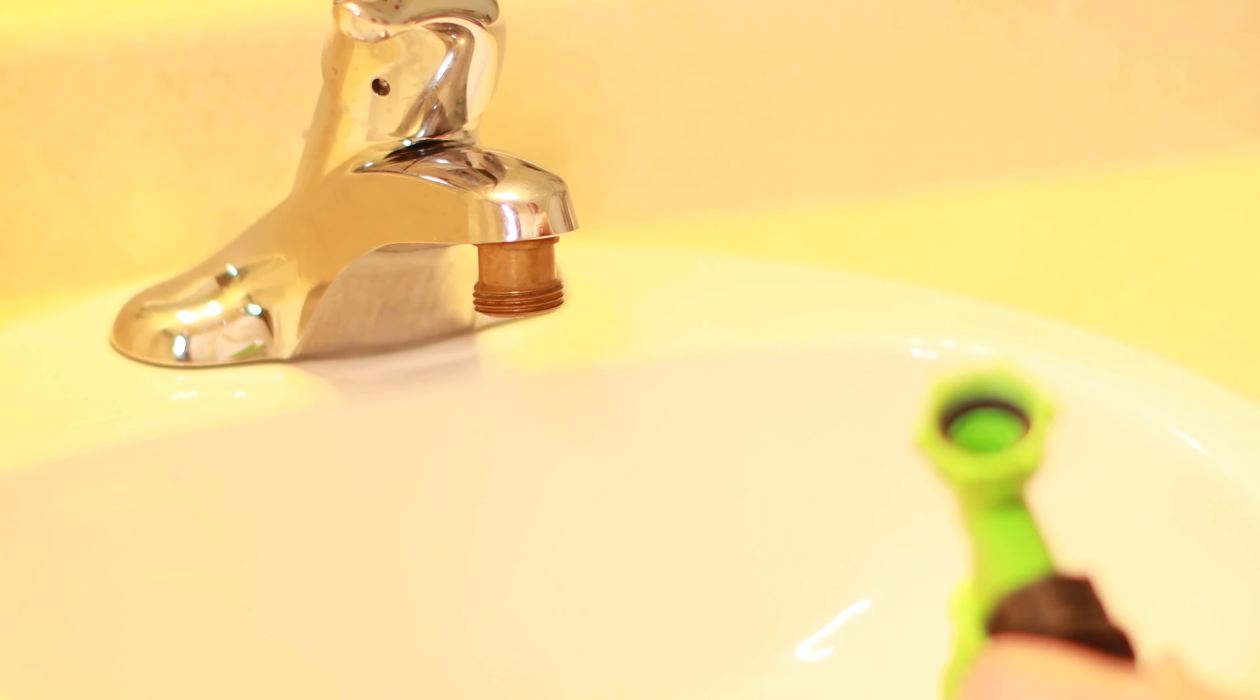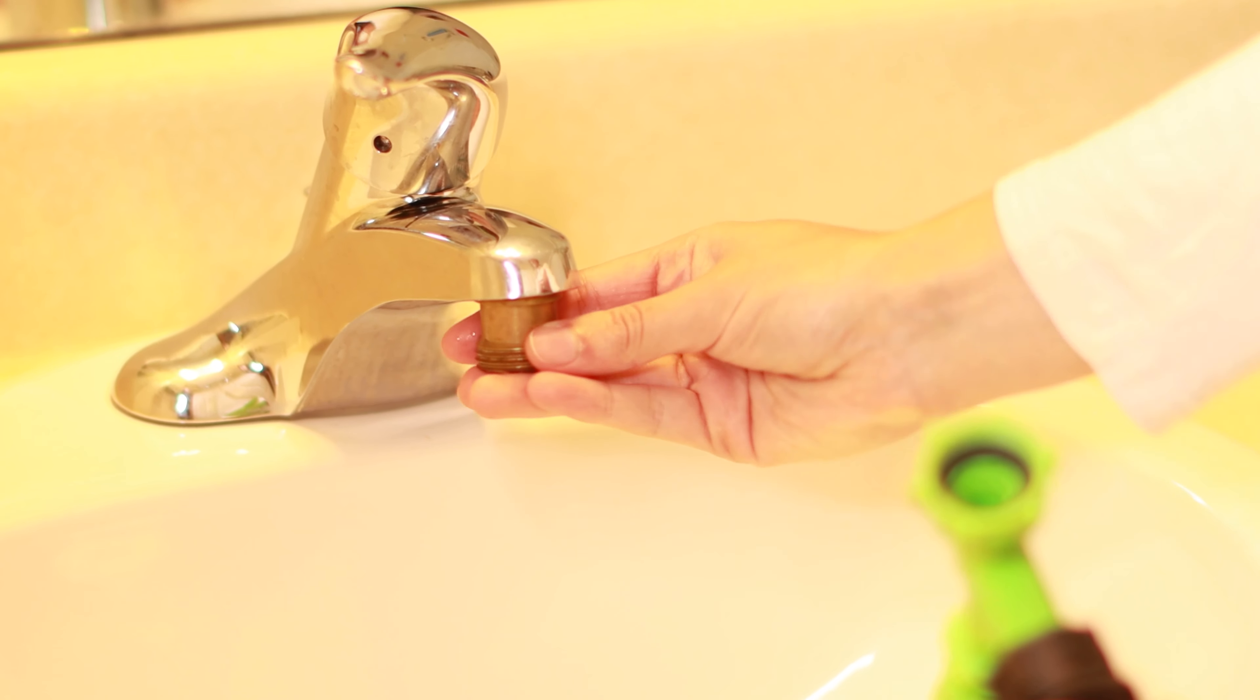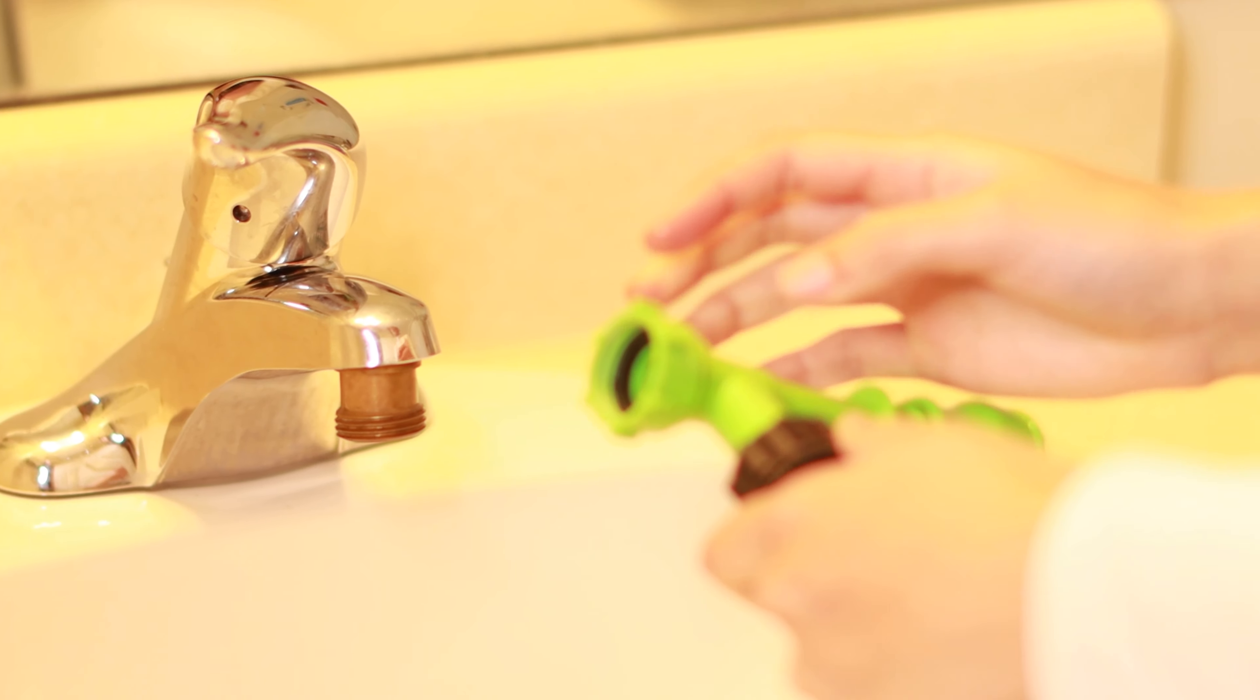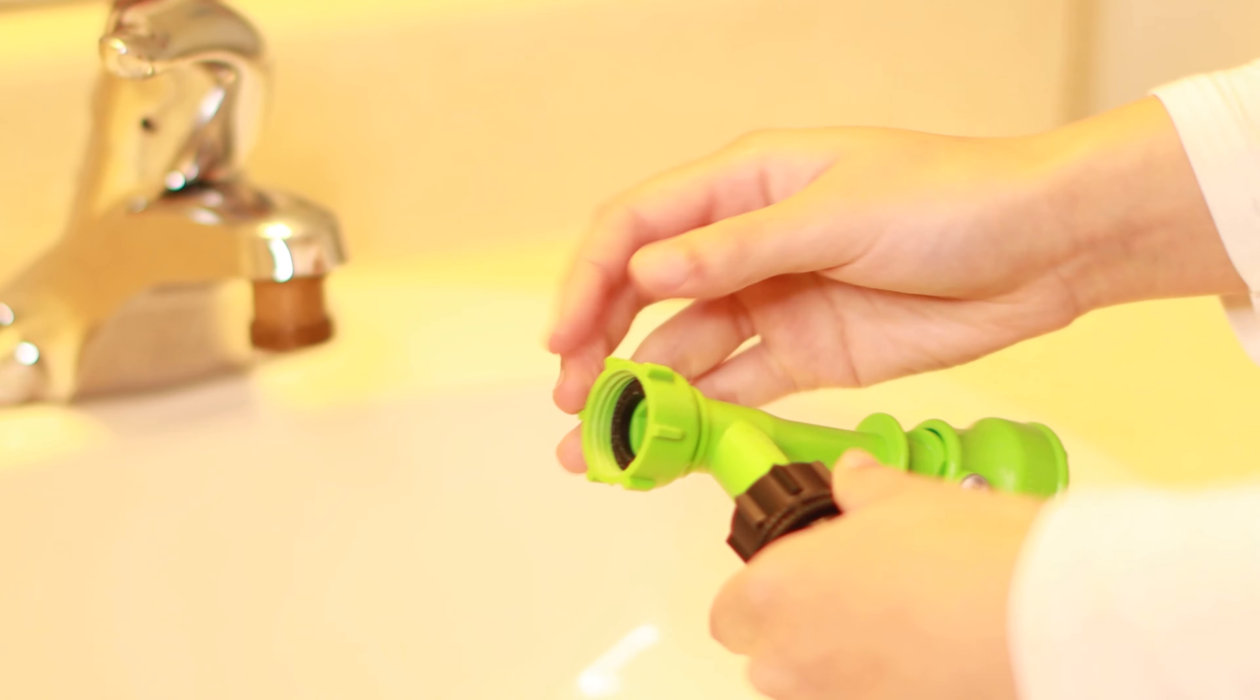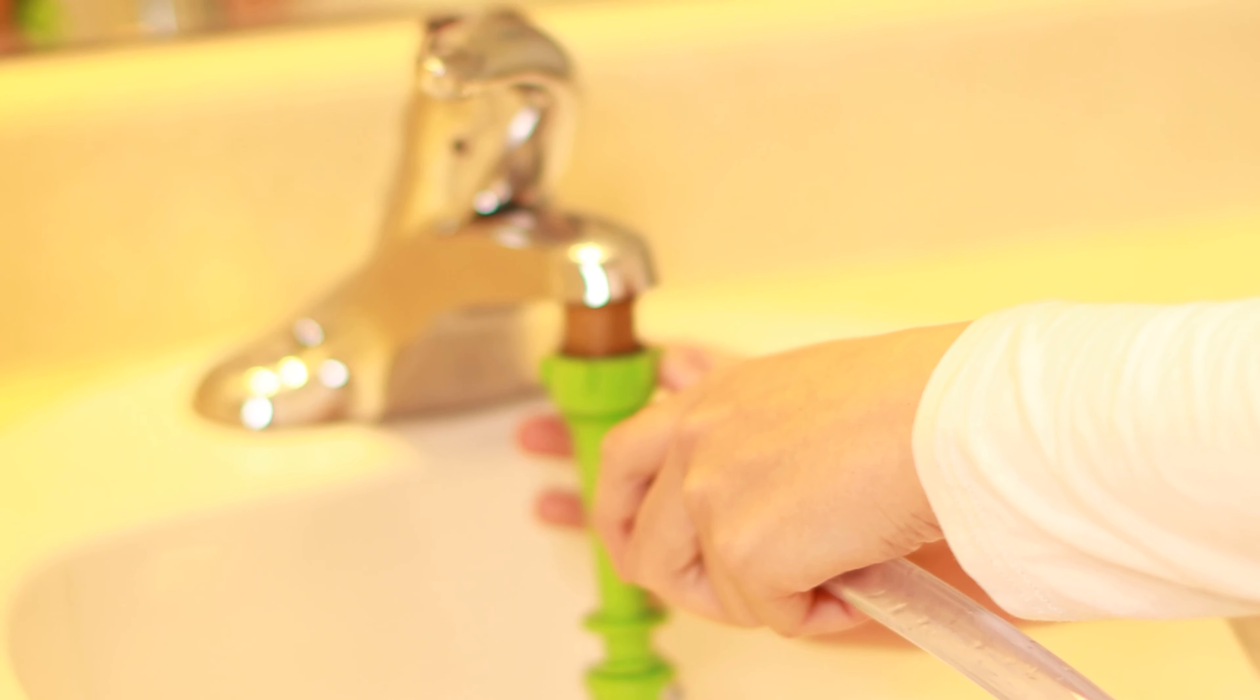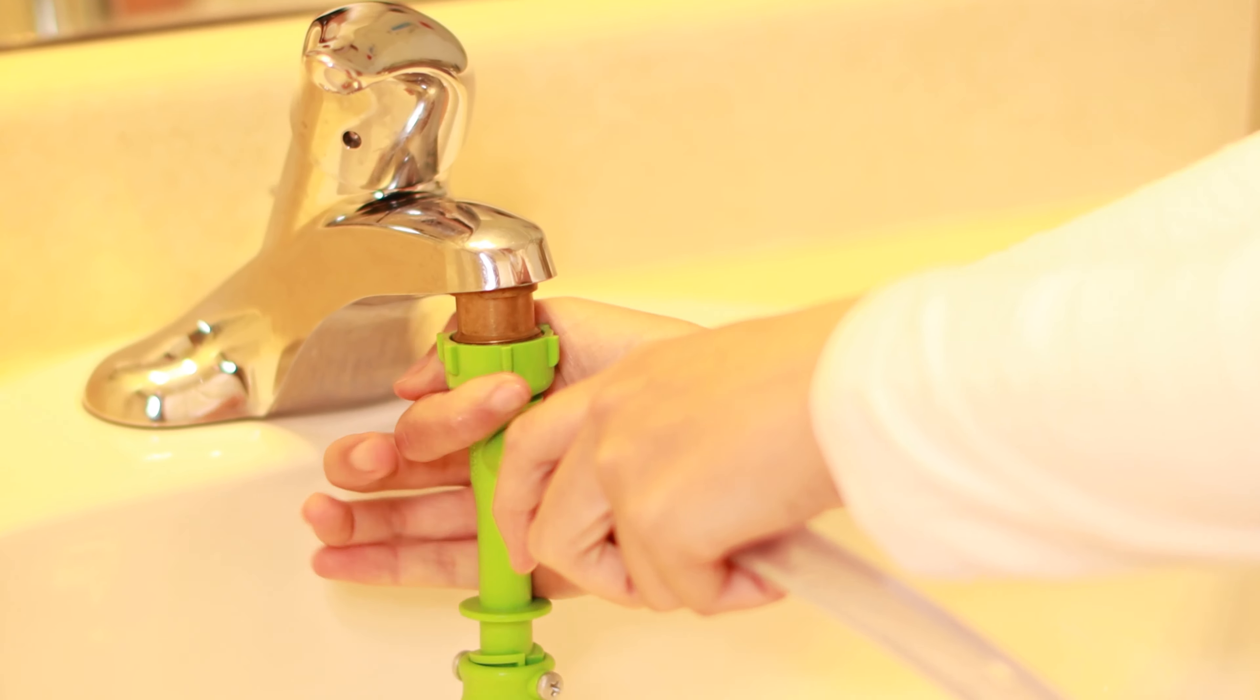Okay, once you have that screwed in and it's tight, take the green part. Now this part can actually loosen and fall off, so make sure you turn it so that it's tightened. Then we're going to attach it to that part that we just screwed in and tighten it onto that.